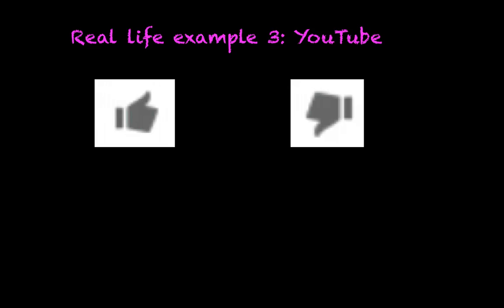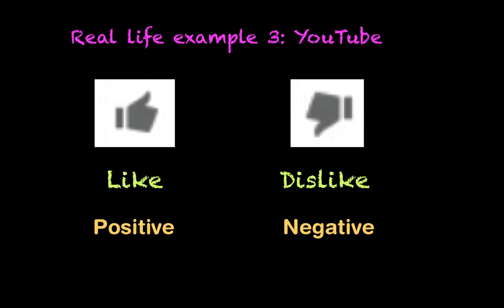So let's look at the third and final real-life example. This time we're looking at YouTube. Now you should be familiar with those two symbols: the thumbs up is for likes and thumbs down for dislikes. You would only like a video if it had a positive impact on you, and you would dislike a video if it had a negative impact on you. So for instance, if you see a video has one million likes, you know that video was very popular. So hopefully this video could get a million likes, so don't forget to hit that like button.